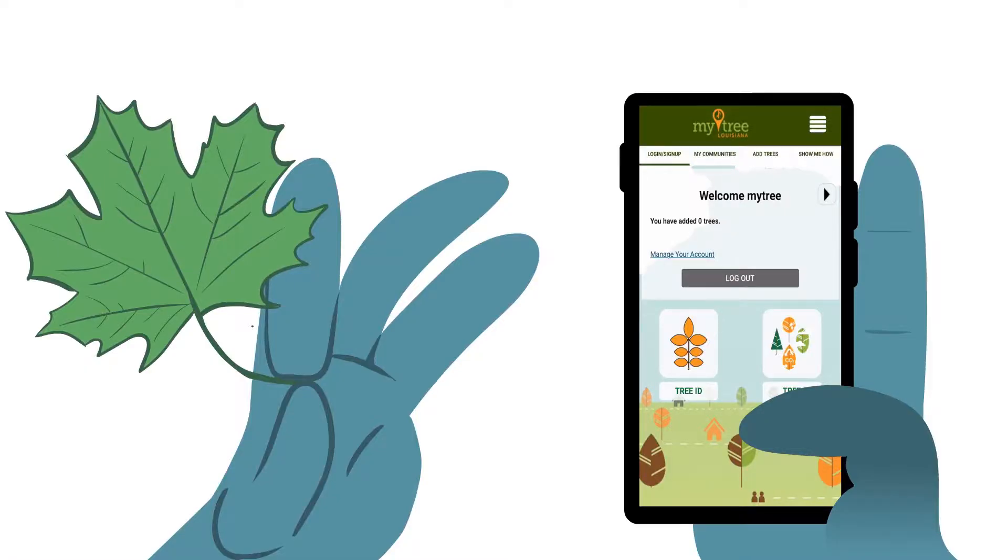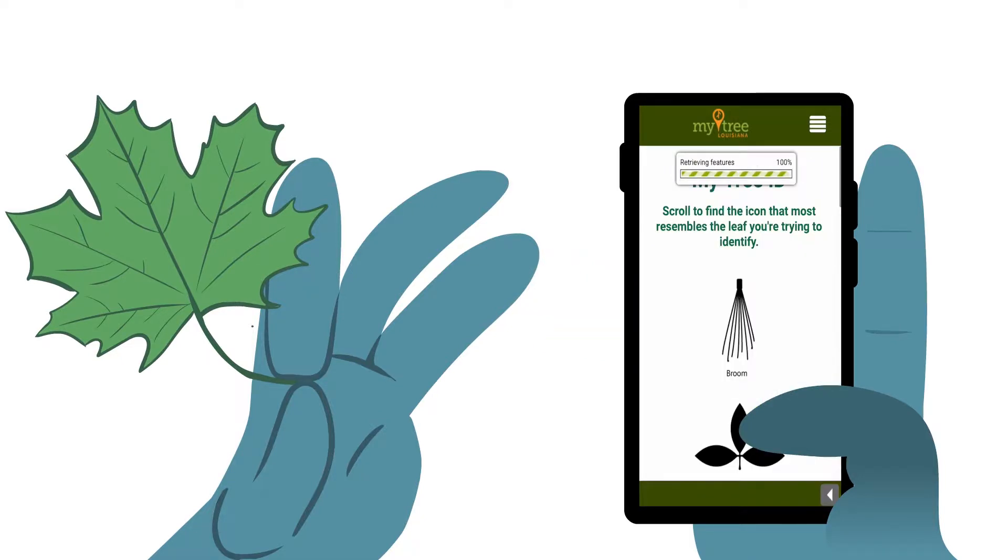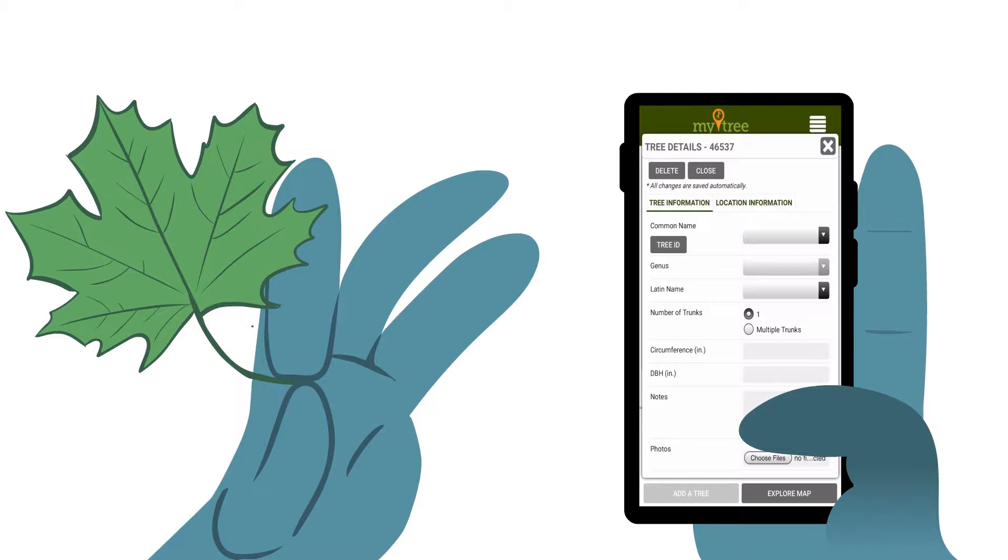In order to do so, you can either click on the Tree ID button on the home screen, or you can click on the Tree ID button in the Tree Details box when plotting a tree.